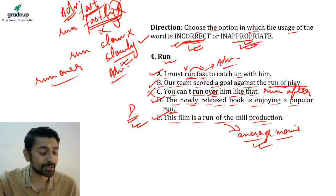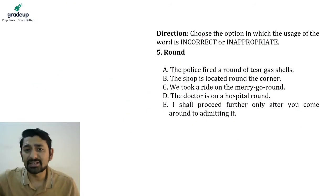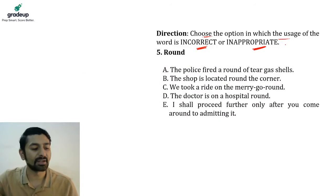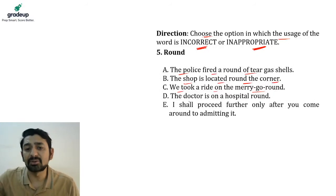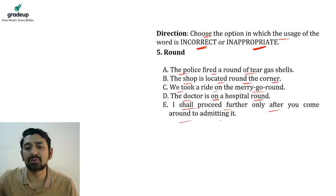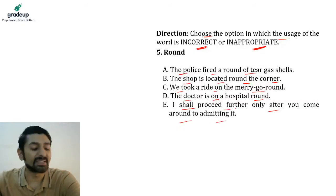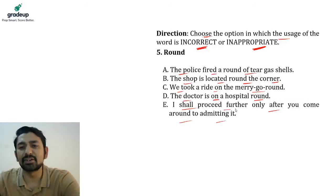Next question — again, choose the option where the usage is incorrect or inappropriate. The word is 'round.' Option A: The police fired a round of tear gas shells. Option B: The shop is located round the corner. Option C: We took a ride on the merry-go-round. Option D: The doctor is on a hospital round. Option E: I shall proceed further only after you come around to admitting it. Which is incorrect?